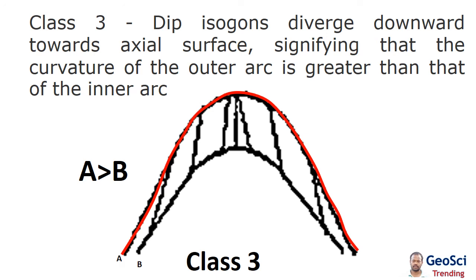Class 3: dip isogons diverge downward toward the axial surface, signifying that the curvature of the outer arc is greater than that of the inner arc. The outer arc, shown in the red line, is greater than the inner arc, shown in the dark line. Thank you.